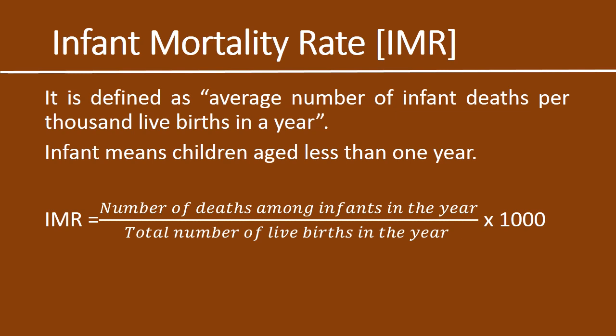So the definition is: average number of infant deaths per thousand live births in a year. Among one thousand live births in a year, the number of infants who die — that gives us the infant mortality rate. Infant means children aged less than one year.